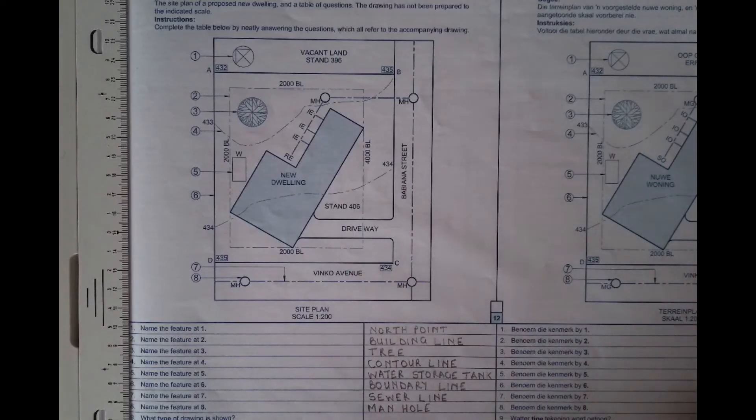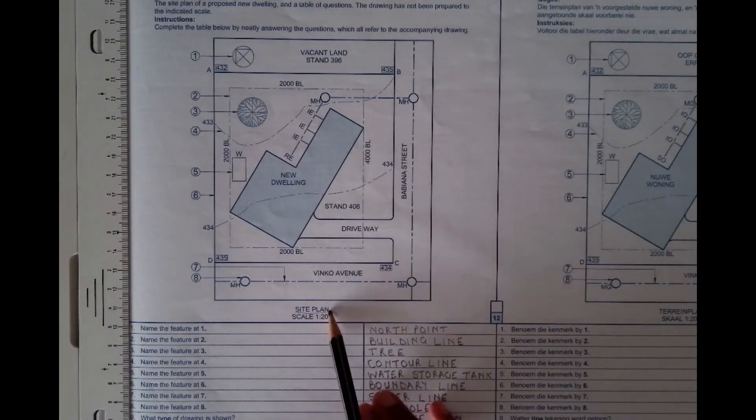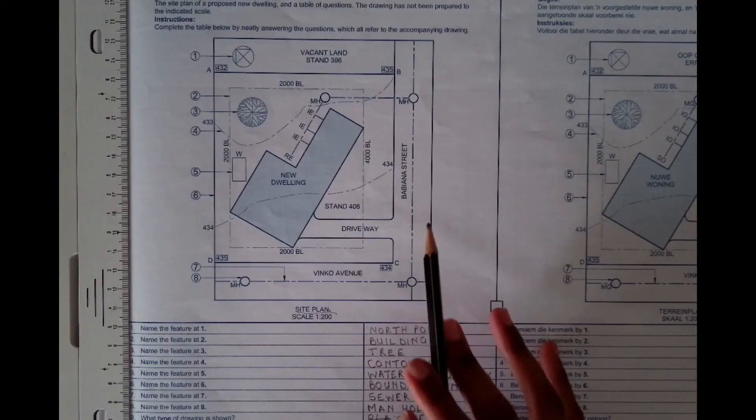And then what type of drawing is shown? The type of drawing that we have shown is a site plan. They can ask you what type or if there is a site plan. If the drawing has another title, then you will write that title. So we are given a site plan. That is the type of drawing. This is a site plan.